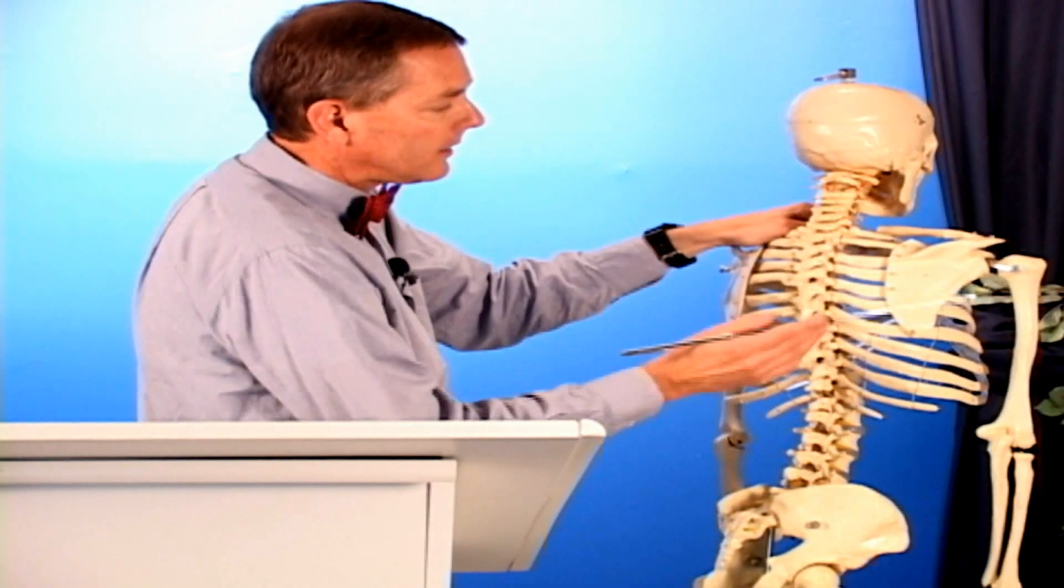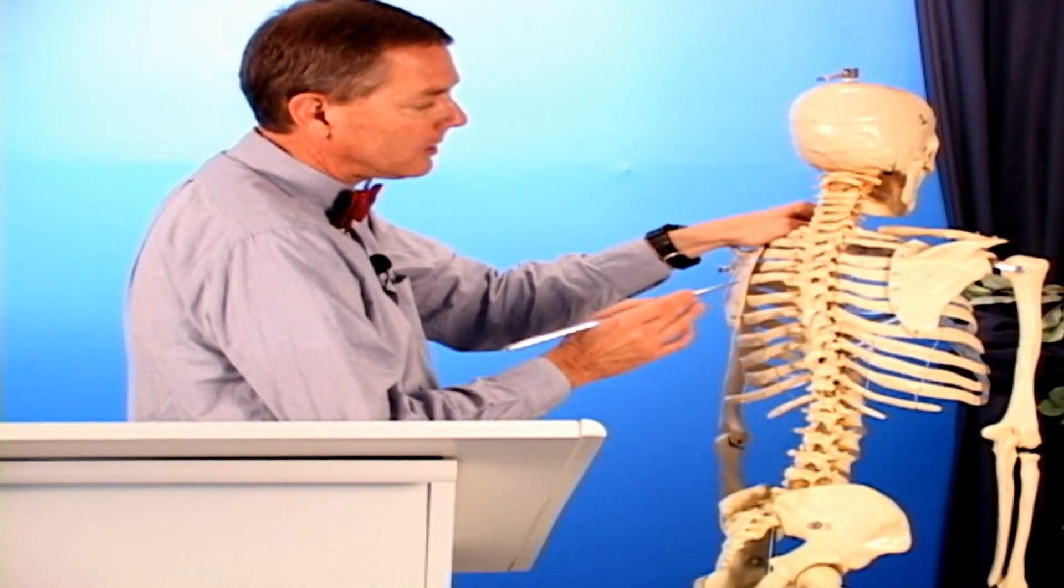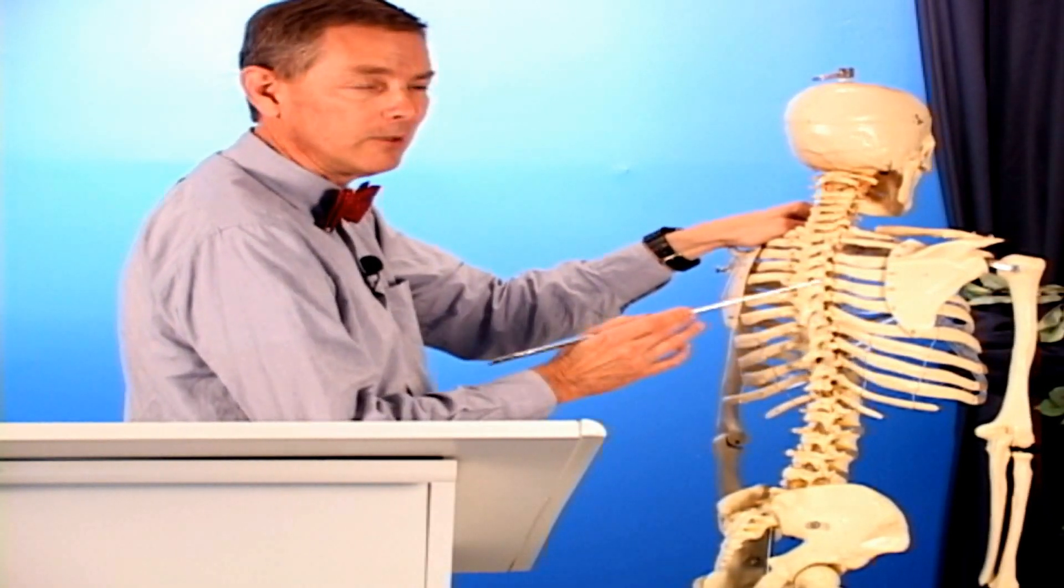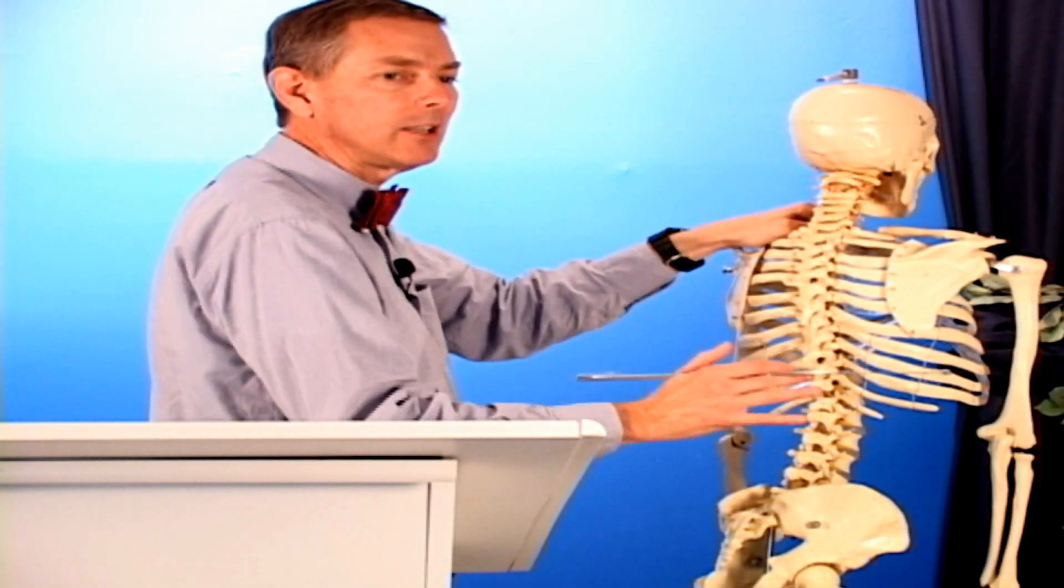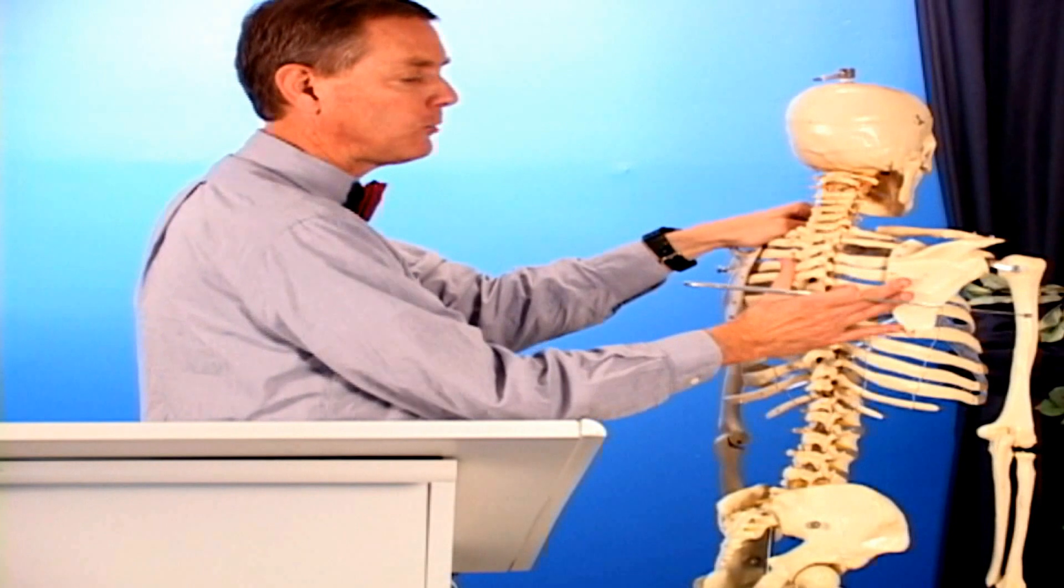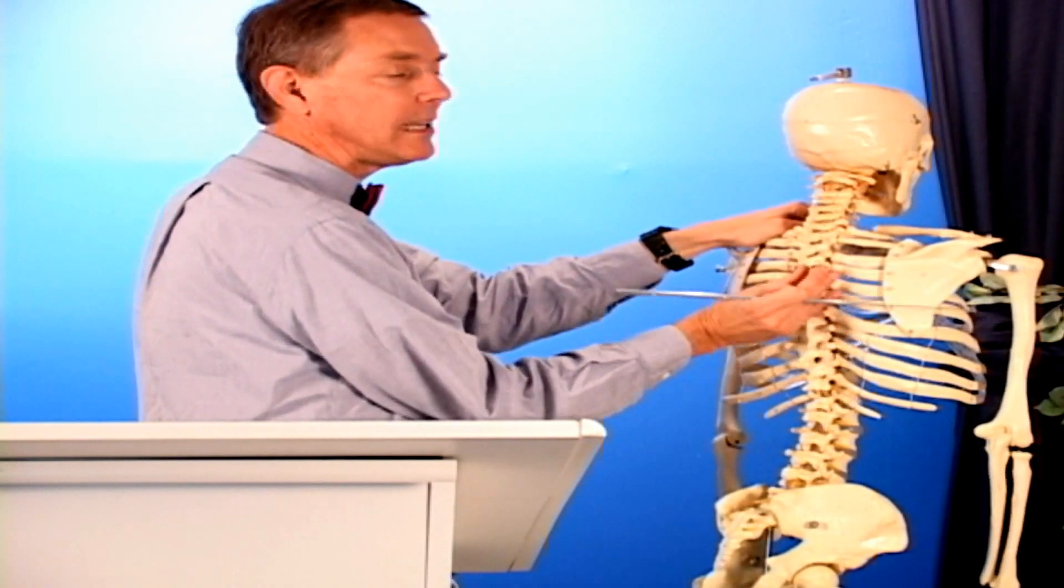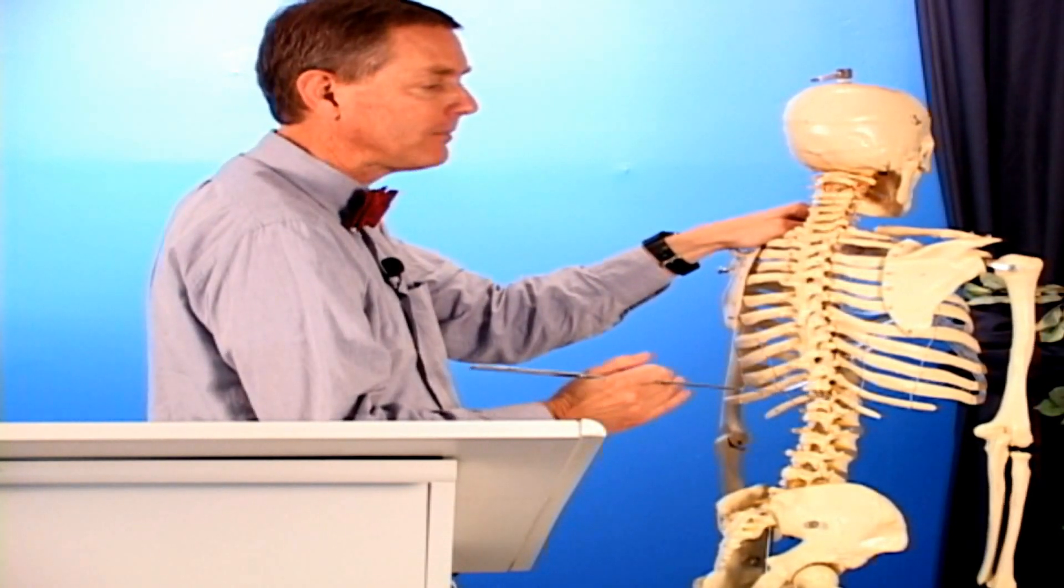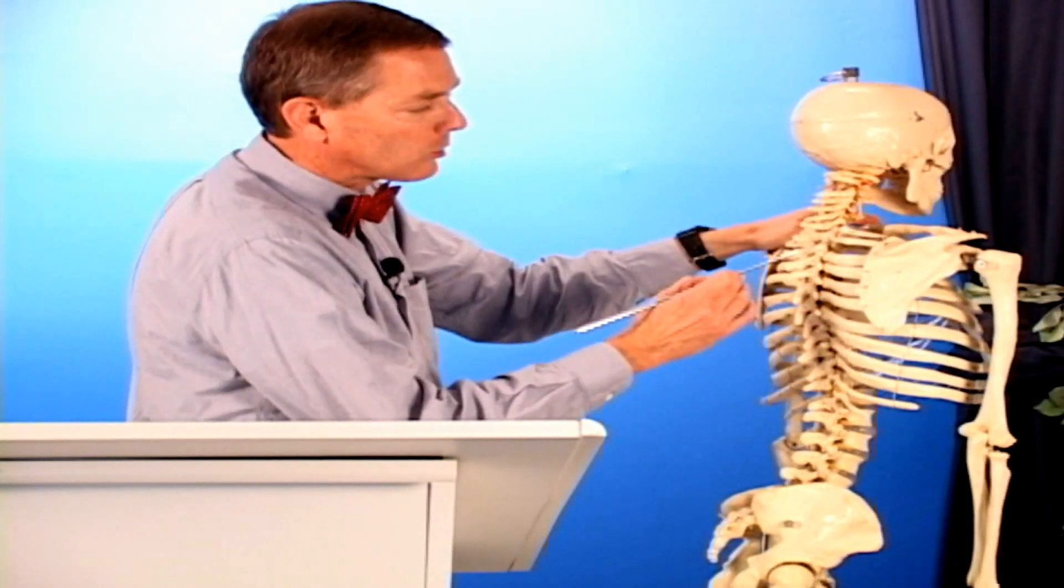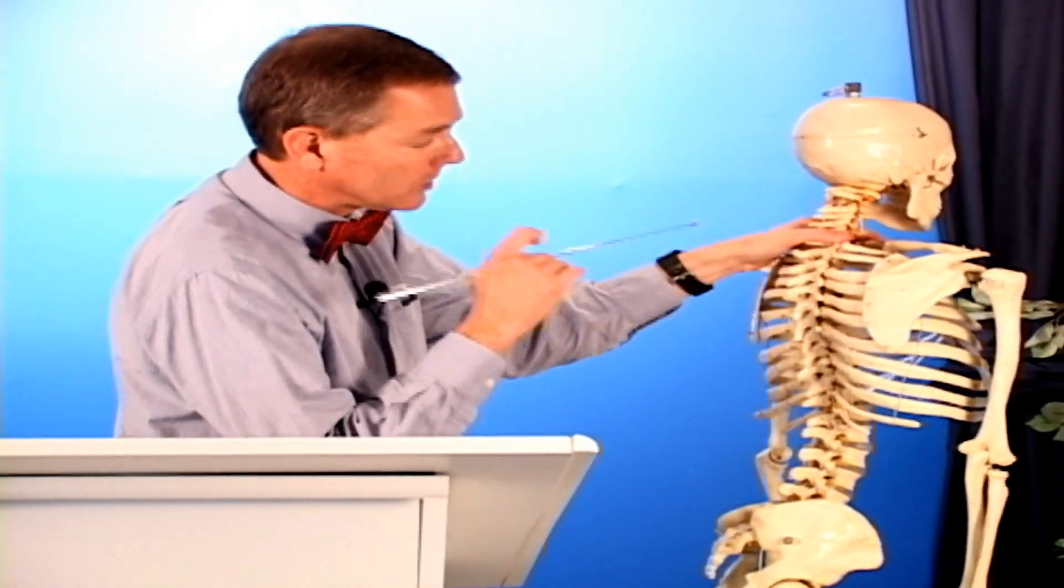Two others are rhomboid minor and rhomboid major. They bring back or retract the scapula, like you're standing at attention, pulling in and squeezing the scapula back. Those are three of the most important ones. There's some on the front side.